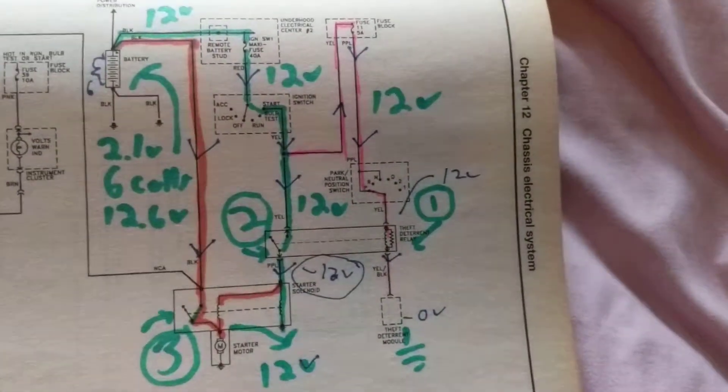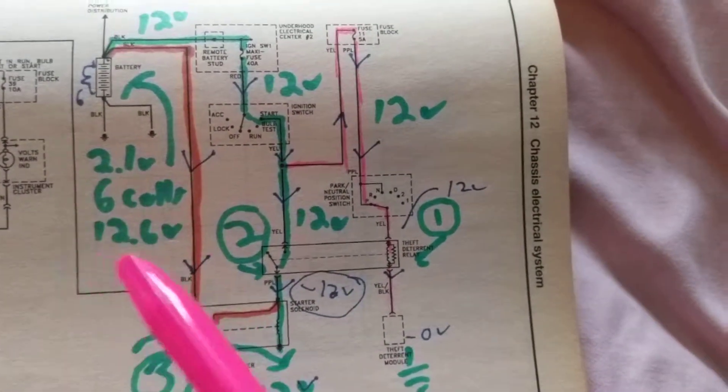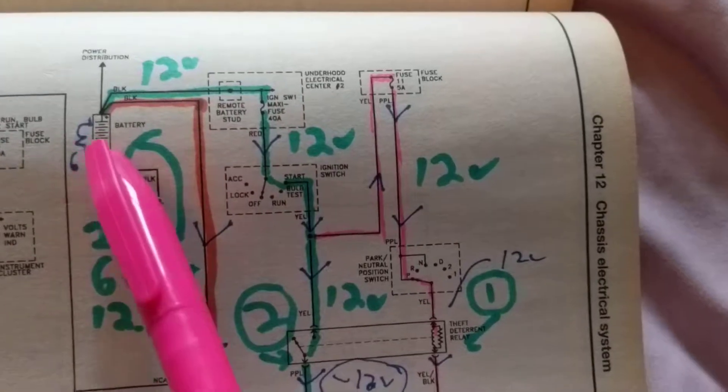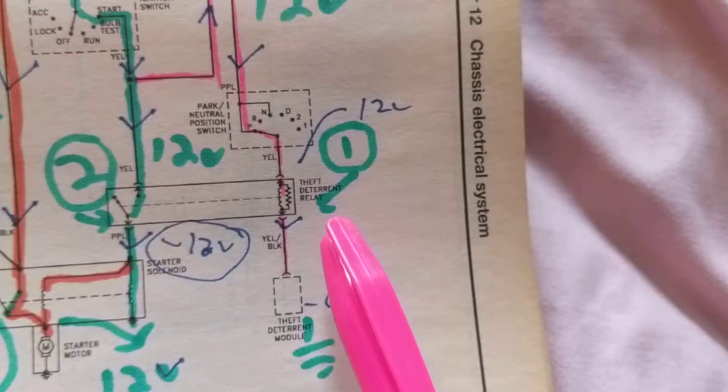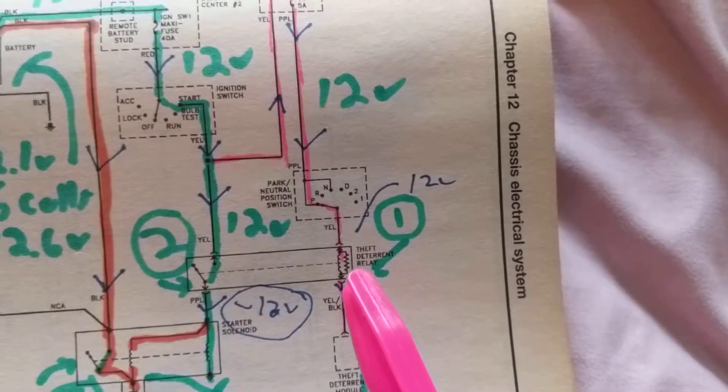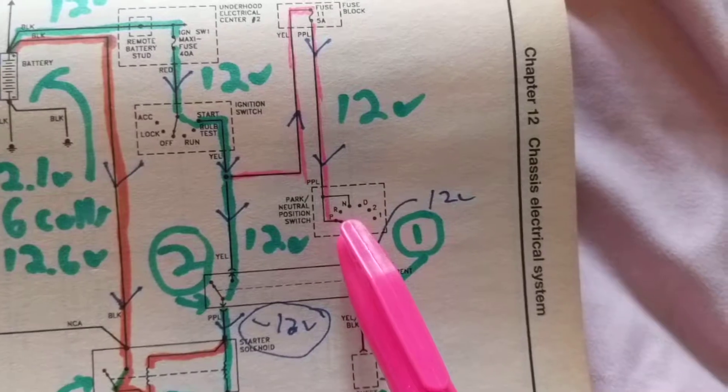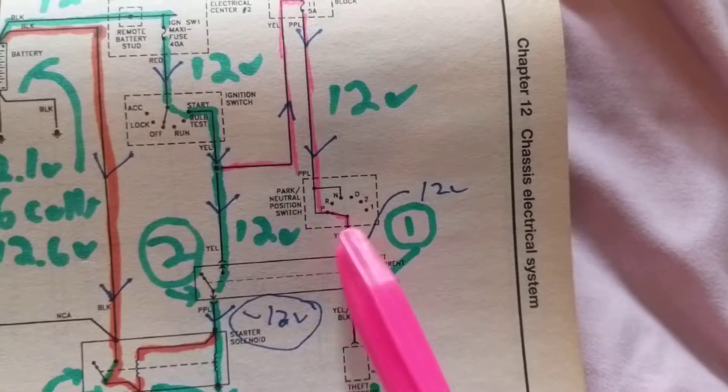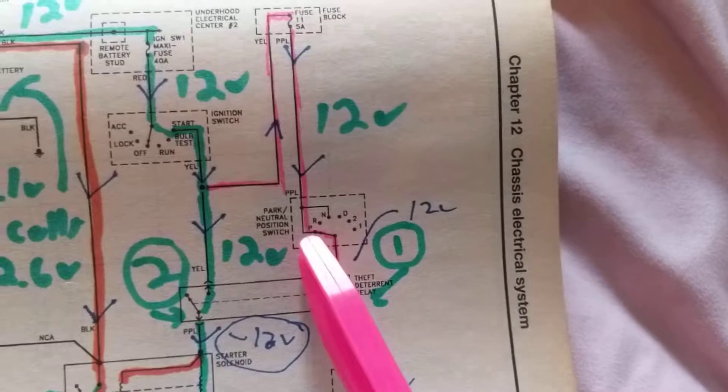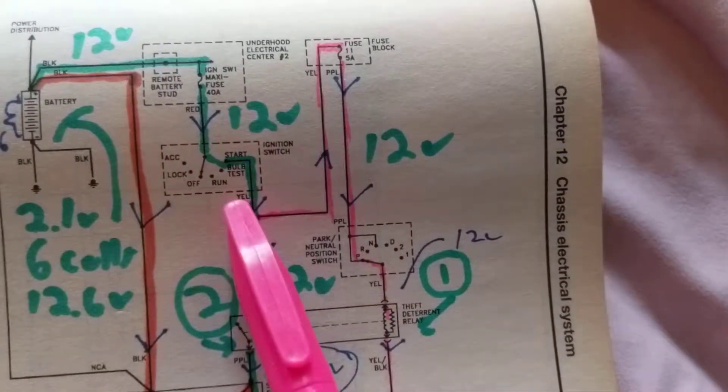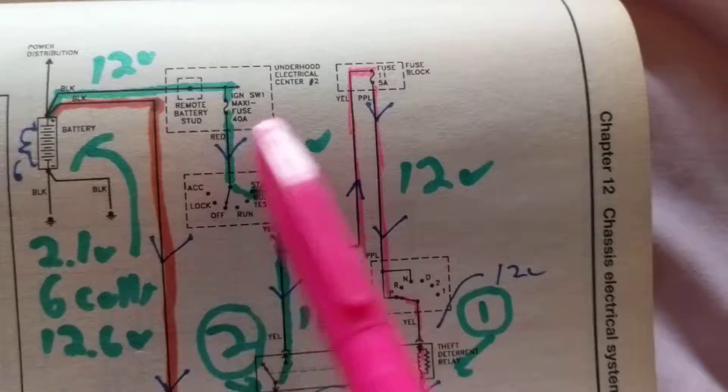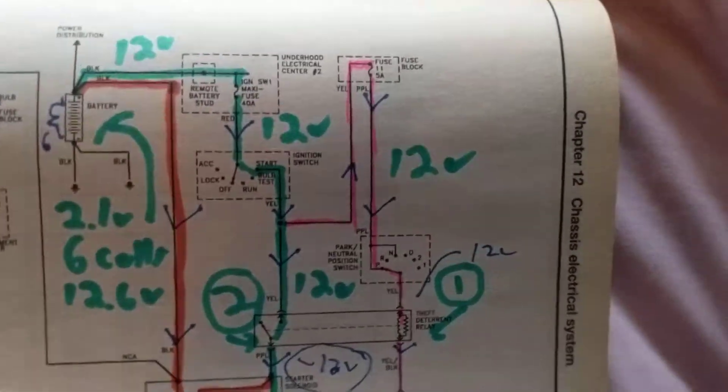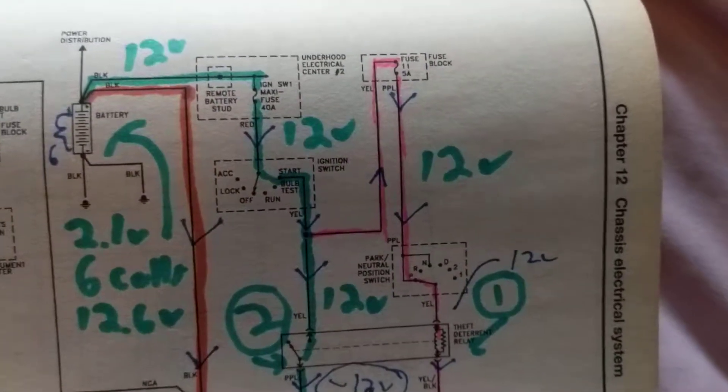We're going to go over here. First, we have a relay over here called theft deterrent relay. We have the switch over here, right? Park neutral position switch, which is dotted over here. We have the ignition switch. And we have a maxi fuse. As I explained in my videos before, there are maxi fuses, there are mini fuses.